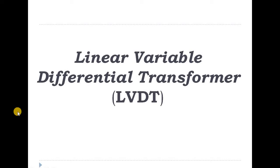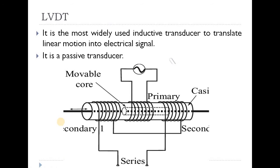Welcome. Today we are going to discuss the Linear Variable Differential Transformer, or LVDT. It is a most widely used inductive transducer to translate linear motion into electrical signal. We have already discussed what an inductive transducer is. It is used to translate linear motion into electrical signal only.